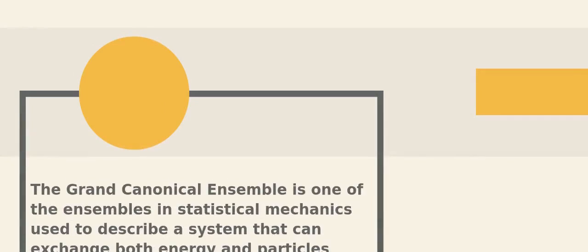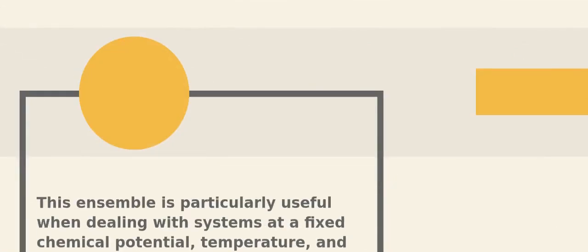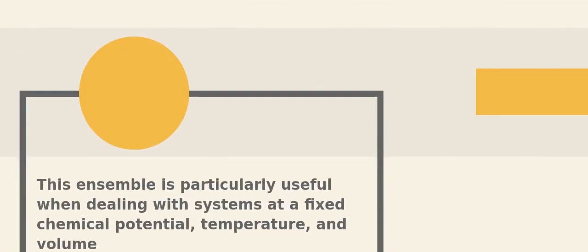The grand canonical ensemble is one of the ensembles in statistical mechanics used to describe a system that can exchange both energy and particles with a reservoir. This ensemble is particularly useful when dealing with systems at a fixed chemical potential, temperature, and volume.